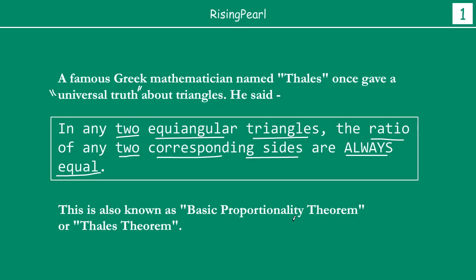Basic proportionality theorem — you can relate to the word proportionality because we are dealing with the ratio of sides. You can think of proportionality as referring to the ratio of the sides. And this is also known as Thales theorem, in honor of the Greek mathematician named Thales.